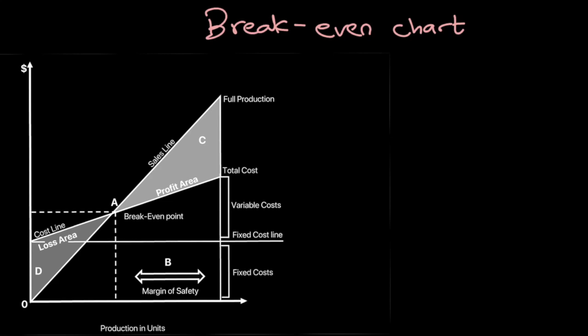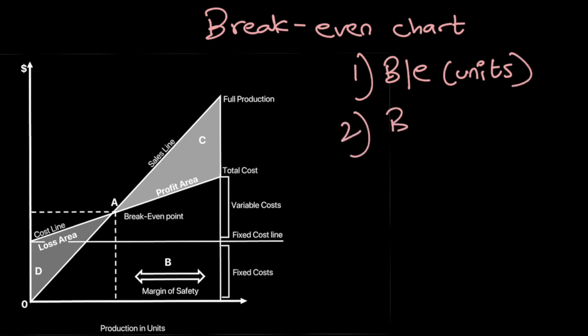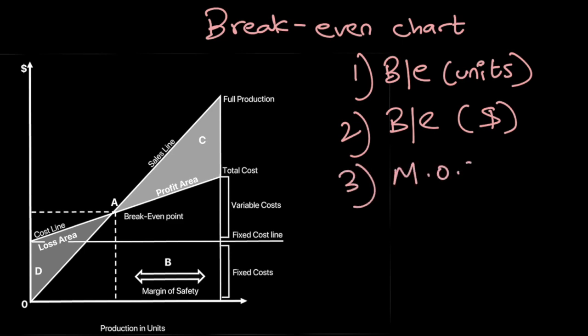Let's look at the breakeven chart. The following information can be represented on it: number one, I can show the breakeven point in terms of units; number two, I can show the breakeven point in dollar terms, which is the revenue terms; and I can also show the margin of safety.